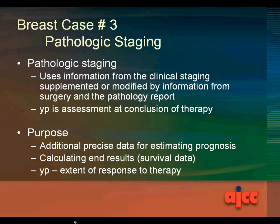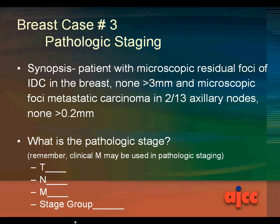The synopsis for this patient: a patient with microscopic residual foci of infiltrating duct carcinoma in the breast, none greater than 3 millimeters, and microscopic foci of metastatic carcinoma in two of the 13 axillary nodes, none greater than 0.2 millimeters. What is the pathologic stage — the T, the N, the M, and the stage group?